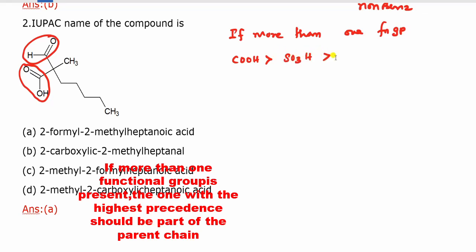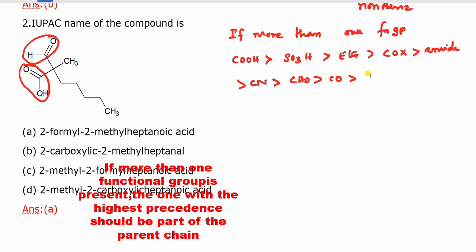The priority order is: sulphonic acid, then ester (acid derivative), then acid chloride (COBr, COCl, etc.), then amide, then acid derivative cyanide, then aldehyde, then ketone. Last one is amide. Acid is the highest priority functional group in this case.